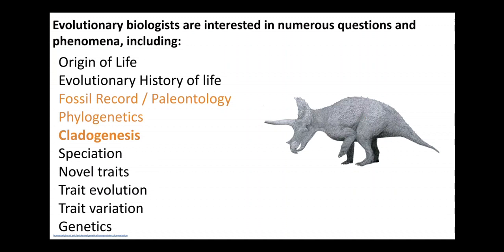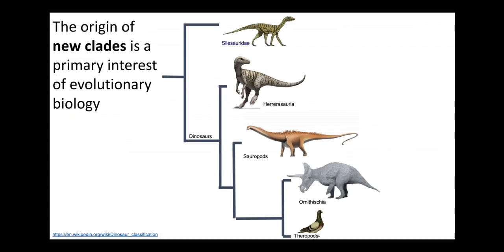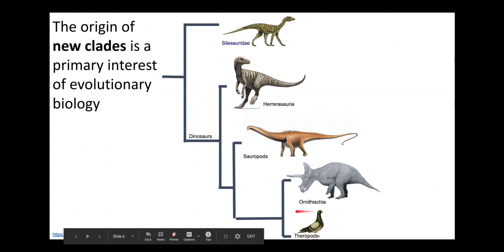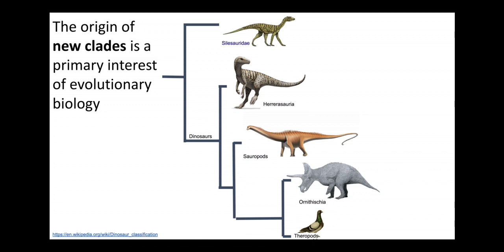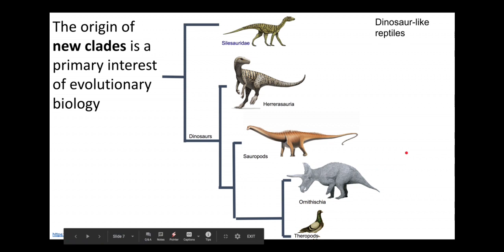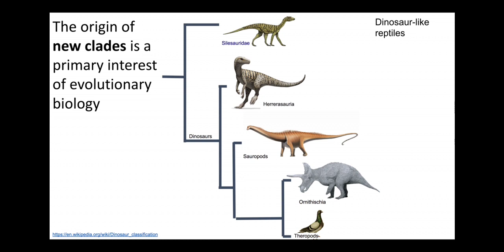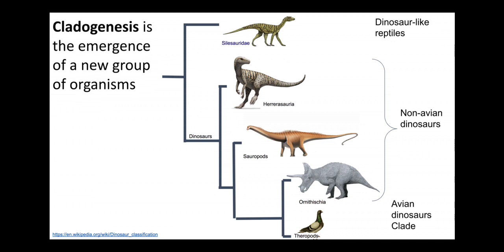Another general question that evolutionary biologists consider is cladogenesis. An example of this type of question is understanding how modern birds, which are a type of theropod dinosaur, emerged from previous clades. We know from the fossil record that many millions of years ago there were dinosaur-like reptiles, and over time there emerged several groups of what we would call non-avian dinosaurs. Eventually a clade of organisms we consider to be closely related — avian dinosaurs — emerged, and this is the property of the process of cladogenesis.